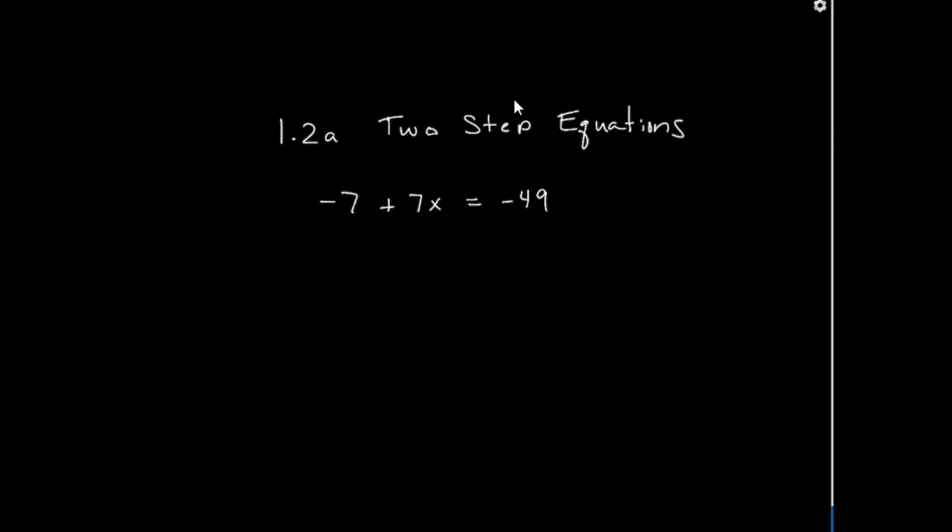So the first thing we're going to do with this is I only have an x on one side of the equation. This is the left-hand side of the equation, that's where I want my variable to end up. So I'm going to look at the number. Always work on moving the number to the other side of the equation first. So this number is a negative 7. That means I want to add 7 to both sides.